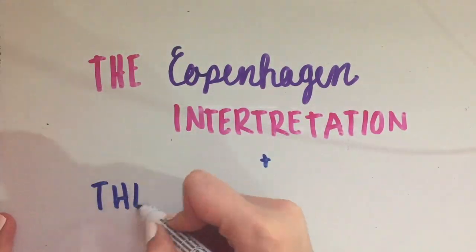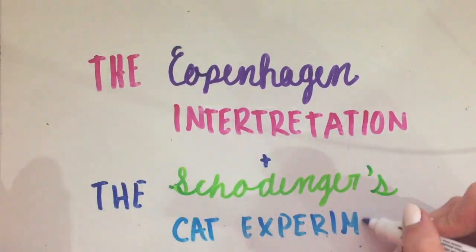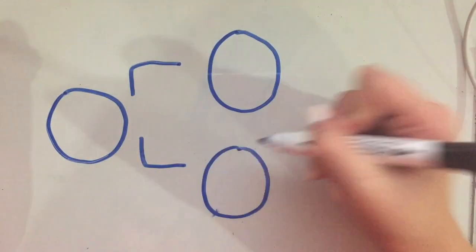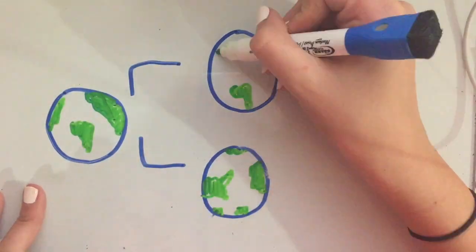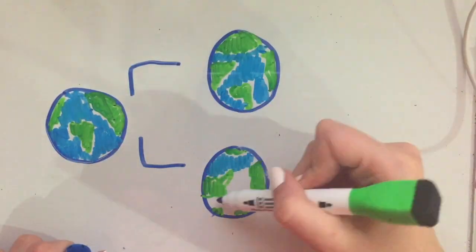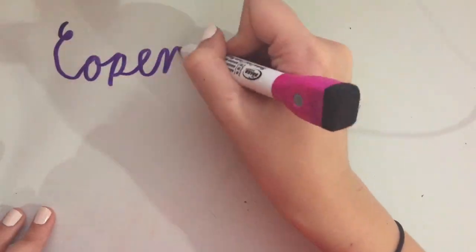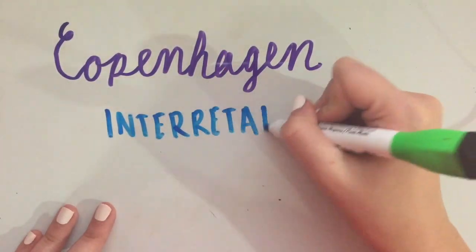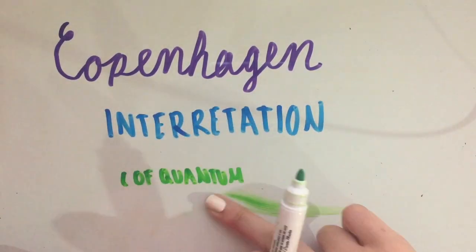What was the Copenhagen Interpretation and Schrödinger's Cat Experiment? There are several different interpretations of quantum physics that exist today. From the Many Worlds Theory to the Bohmian Interpretation, the one that has become the standard for quantum theory today is the Copenhagen Interpretation.